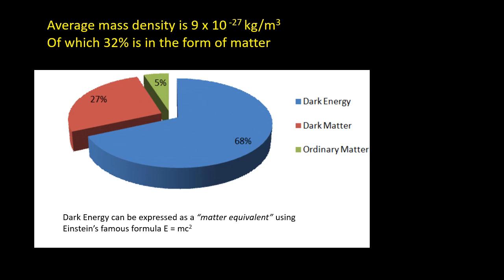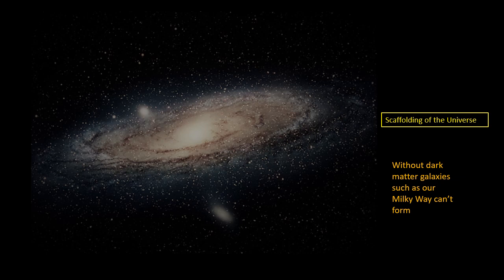Most of the matter in the universe is in the form of dark energy. The remainder, 32%, is in the form of matter, and most of this matter is in the form of dark matter. Dark matter is the scaffolding of the universe. The visible matter, out of which all objects that we can see—planets, stars, galaxies—collected inside this scaffolding and eventually formed the stars and galaxies we see today.